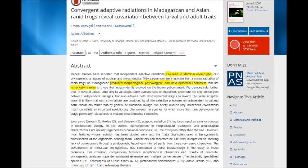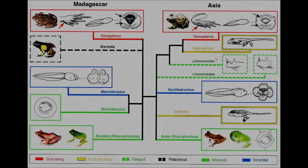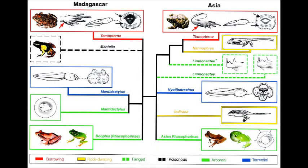Another article titled 'Converging Adaptive Radiations in Madagascan and Asian Ranid Frogs' reports that both Madagascan and Asian frogs share identical ecomorphs, with remarkable similarity in morphological, physiological, and developmental characteristics through independent parallel adaptive pathways. Despite such remarkable similarity, researchers conducted an analysis of nuclear and mitochondrial DNA showing that the two different species of frogs are actually unrelated to each other, sharing no common ancestry at all — yet another devastating contradiction for homology and common descent.